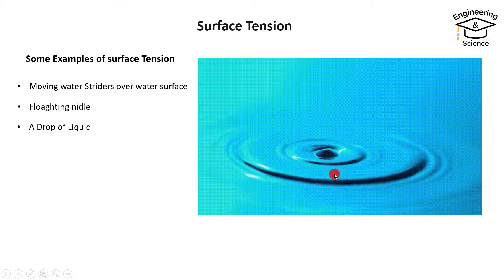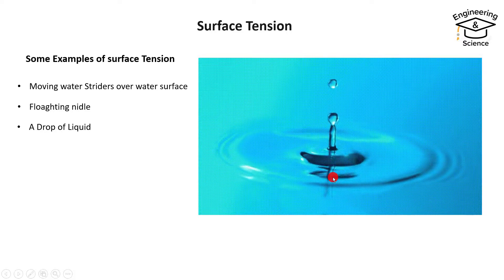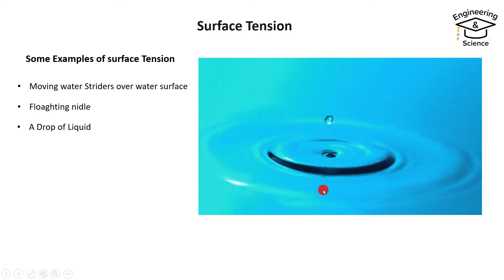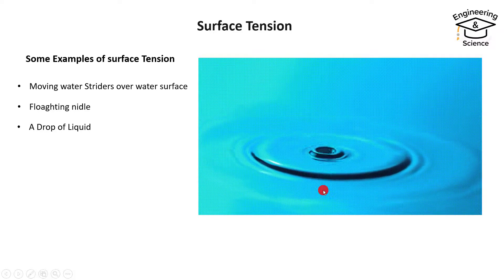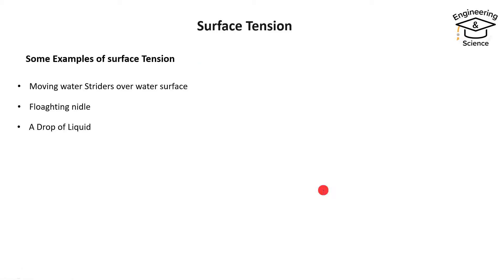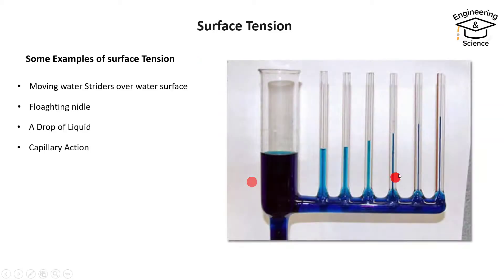Another case is a drop of liquid — a water drop gets a spherical shape due to surface tension, as it tries to have a minimum surface area. Capillary action also belongs to the surface tension phenomena, and we will discuss this in a special tutorial.